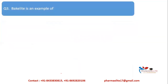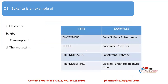Question 3: Bakelite is an example of — elastomer, fiber, thermoplastic, or thermosetting? Elastomers include Buna-S, Buna-N, and neoprene. Fibers include polyamides and polyesters. Thermoplastics include polystyrene and polyvinyl. Thermosetting polymers, which get hardened on heating and cannot be reshaped, include Bakelite and urea formaldehyde resin. So Bakelite is an example of a thermosetting polymer.